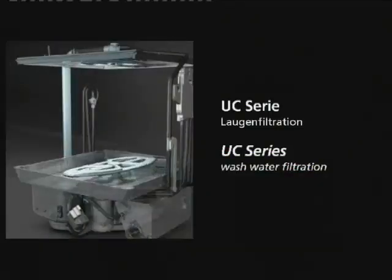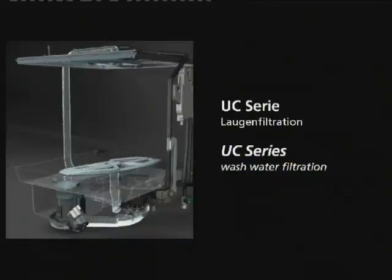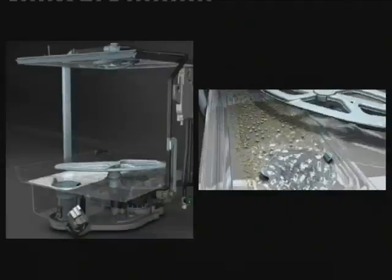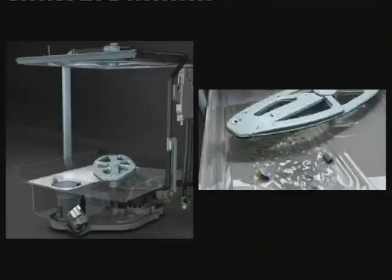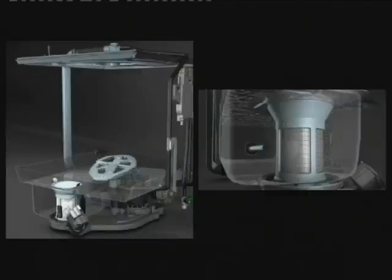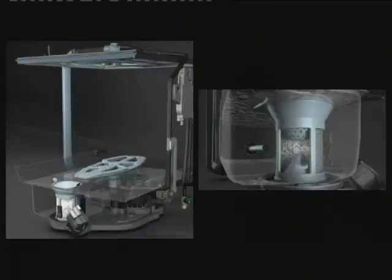Water from the wash tank is taken through the wash pump to the wash fields. During this process, food soil is removed and caught on the coarse filter system. This sloping filter moves the food particles into the catchment basket where it is prevented from being recirculated.